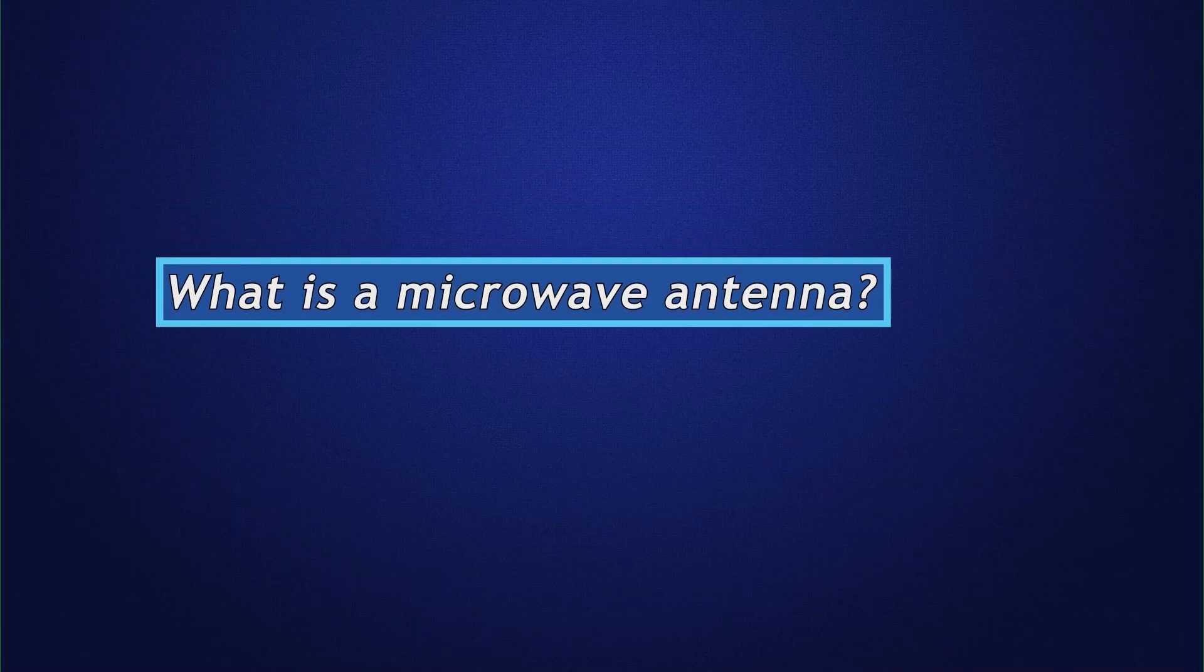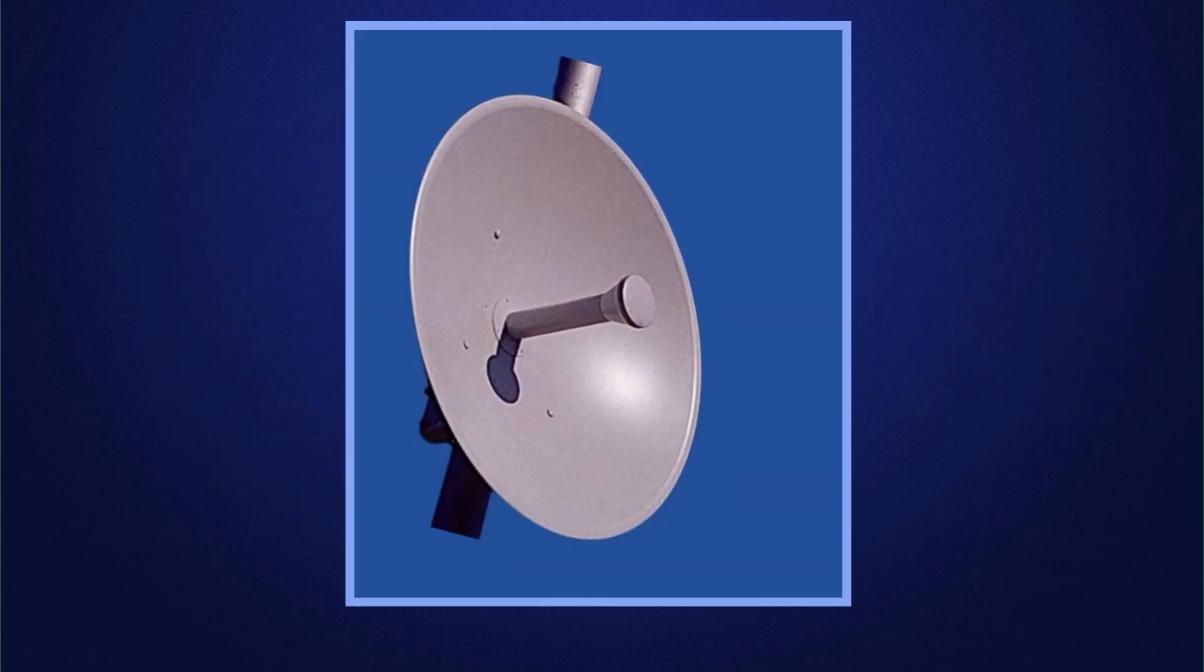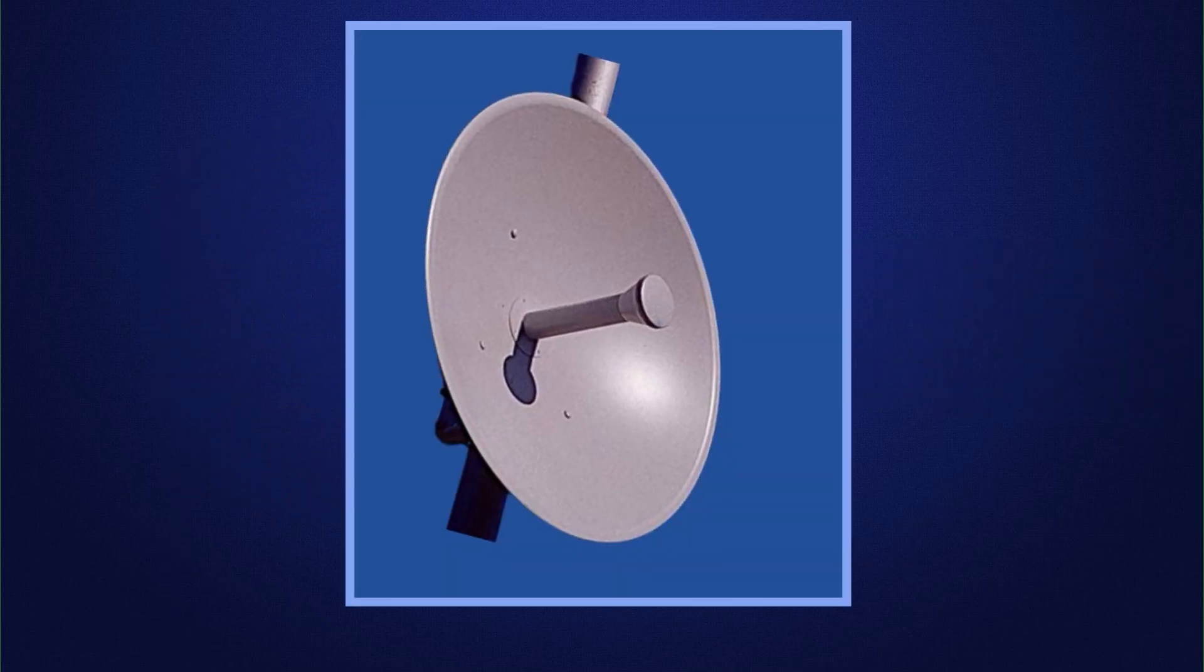What is a microwave antenna? A microwave antenna is a device that converts electrical signals into radio waves and vice versa. The antenna is typically made up of a metal reflector and a feedhorn.